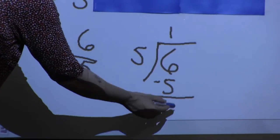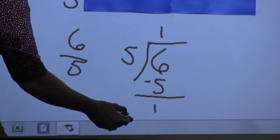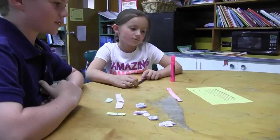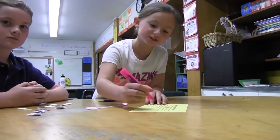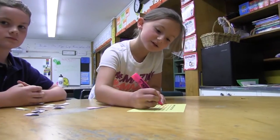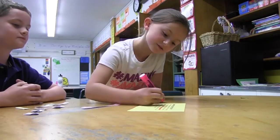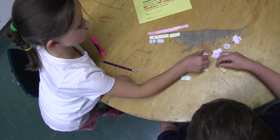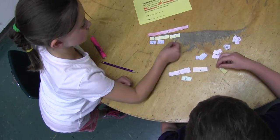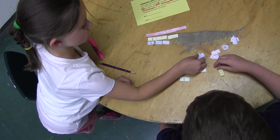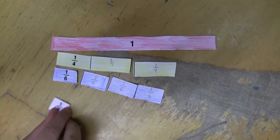In third grade, we really start to teach students how to compare fractions with common denominators and denominators that are not common, which will then lead into equivalent fractions that they'll see a lot of in fourth grade. The lesson today was about three children who had some pizzas and each child had a different portion of their pizza left.